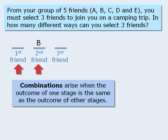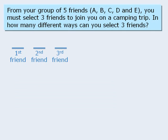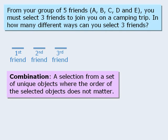Now when the outcome of one stage is the same as the outcome of another stage, we most likely have a combination question. We say that a combination is a selection from a set of unique objects where the order of the selected objects does not matter. The important part here is that the order of the selected objects does not matter.